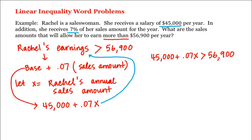Now we can subtract 45,000 from each side, which gives us 0.07 times X is greater than 56,900 minus 45,000. Or 0.07 times X is greater than 11,900.